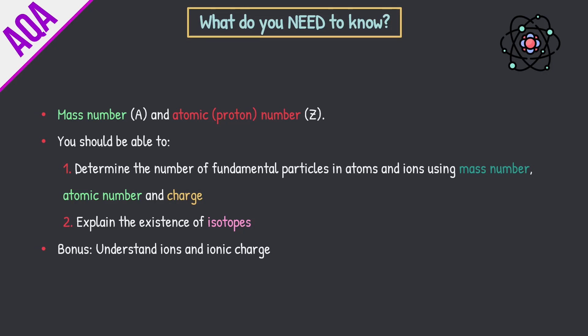First off we have mass number, which is given the symbol A — capital A — and you have atomic or proton number, given the symbol capital Z. You should be able to determine the number of fundamental particles in atoms and ions using the three following things: mass number, atomic number, and charge. You also need to be able to explain the existence of isotopes. Now there's a little bonus here: understand ions and ionic charge. This isn't actually mentioned in the specification but you 100% need to know it, so I've added it into this lesson to give you a bit of a head start.